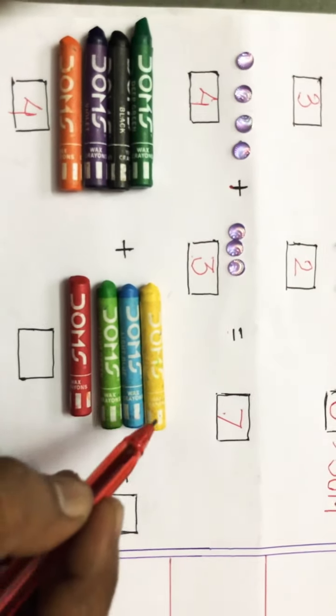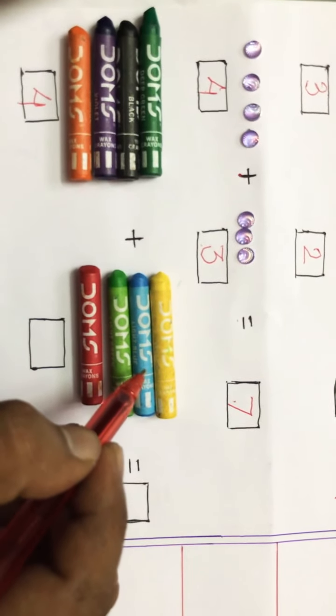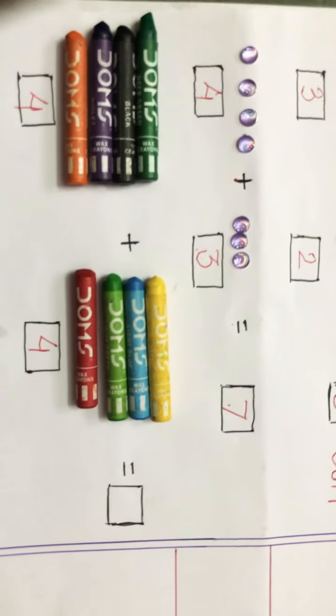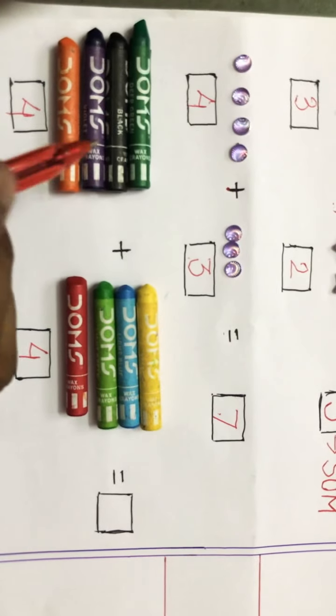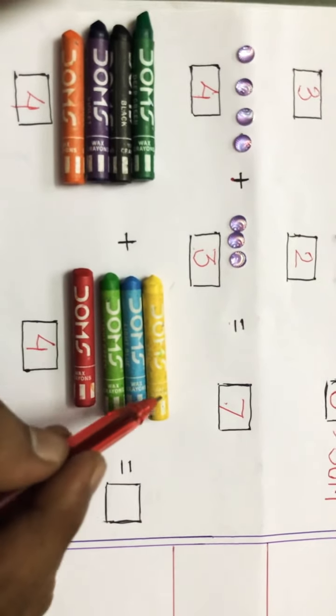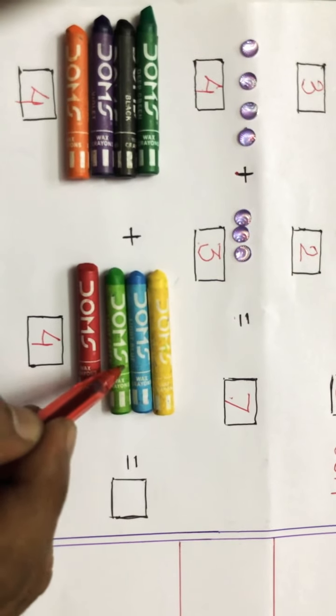Plus, now count these crayons: one, two, three, four. Now count all together: one, two, three, four, five, six, seven, eight.